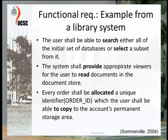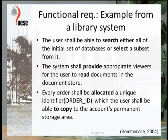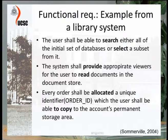For example, I have taken an example from Somerville's software engineering book where they talk about a library system. For the functional requirements, they phrase statements like: 'The user shall be able to search either all of the initial set of databases or select a subset from it.' You can see there are actions that the user should be able to do. Then: 'The system shall provide appropriate viewers for the user to read documents in the document store.' This describes what the system does for the user.